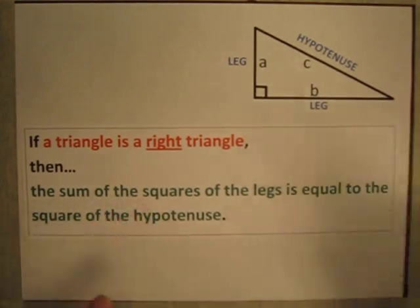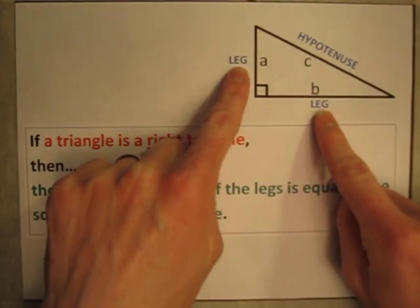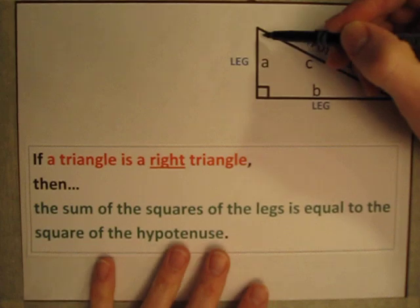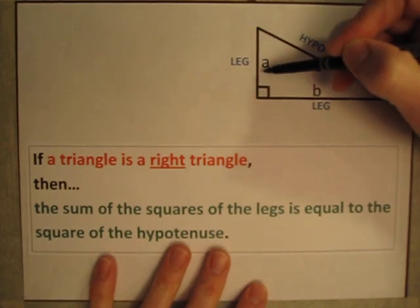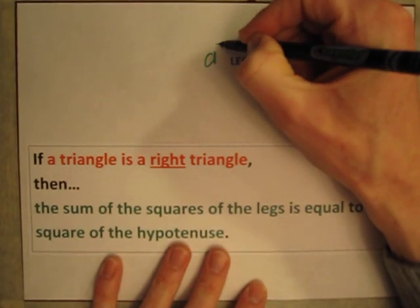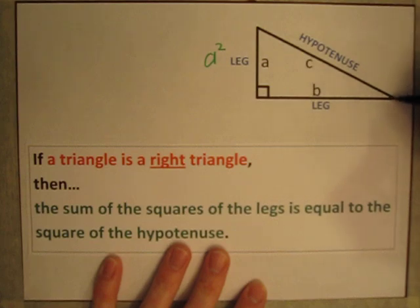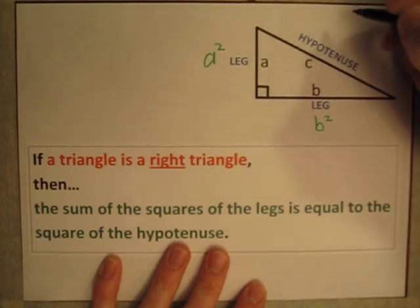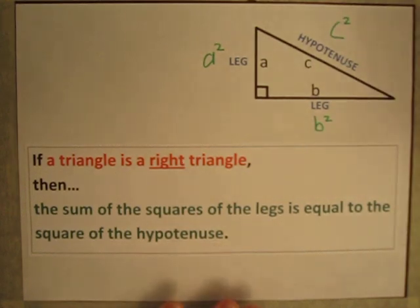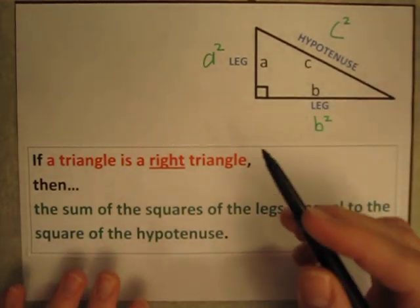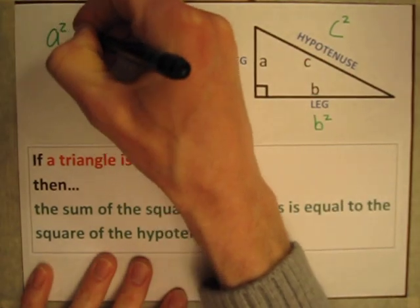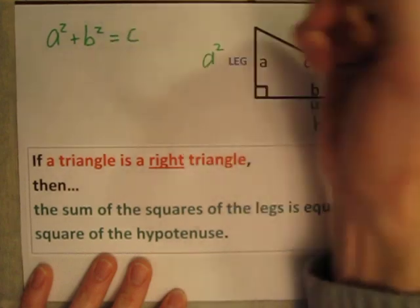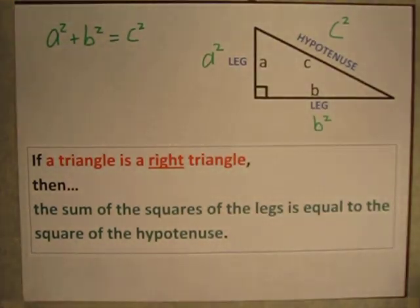So in our theorem again, it says if it's a right triangle, then the sum of the squares of the legs adds up to the square of the hypotenuse. If this leg is A, then this leg squared is going to be A squared. If this leg is B, then this leg squared is going to be B squared. And the hypotenuse is C, so the hypotenuse squared is simply C squared.